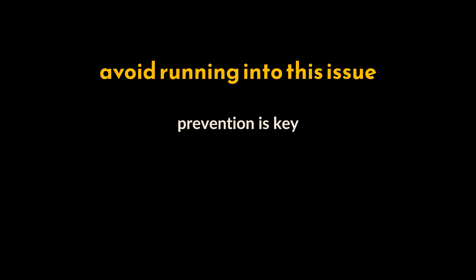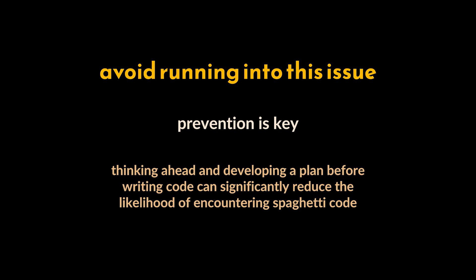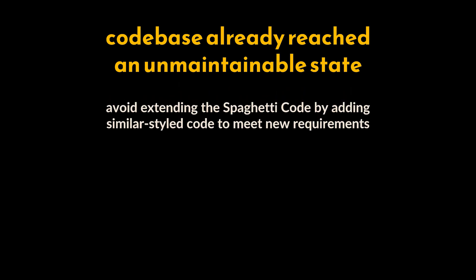To combat the spaghetti code anti-pattern, prevention is key. Thinking ahead and developing a plan before writing code can significantly reduce the likelihood of encountering this issue. However, if the code base has already reached an unmaintainable state and re-engineering is not an immediate option, certain steps can be taken to avoid worsening the problem. When new features are added, avoid merely extending the spaghetti code by adding similar styled code to meet new requirements.